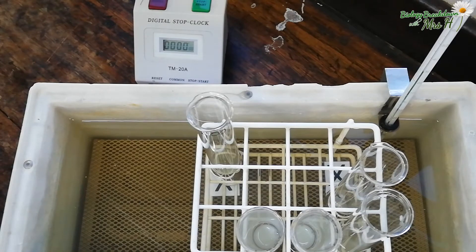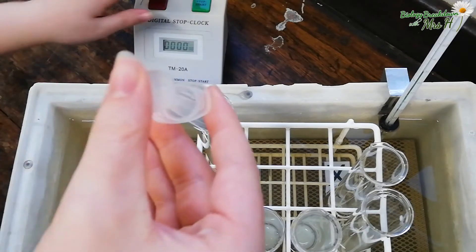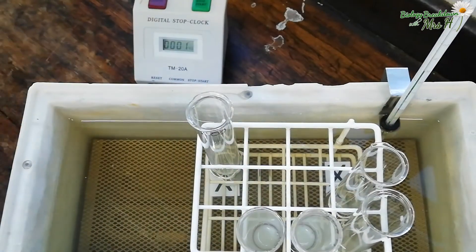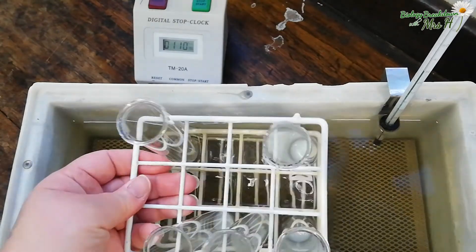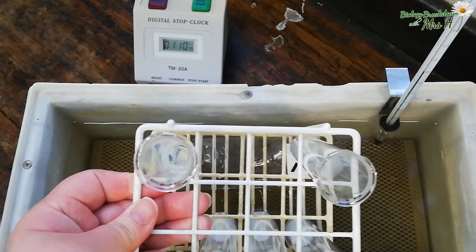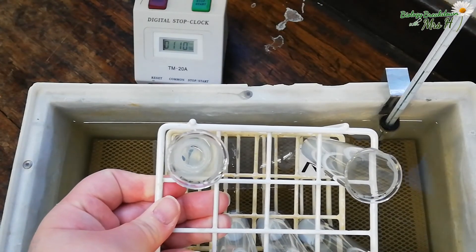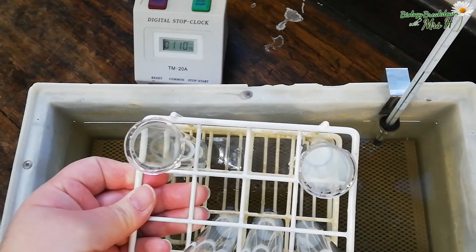Then you need to add 2 cm³ of the 2% trypsin to that milk and start the timer immediately. You will need to look directly above the tube until the cross becomes visible. When the cross does become visible you stop the timer and you record your time in seconds in your pre-prepared table.